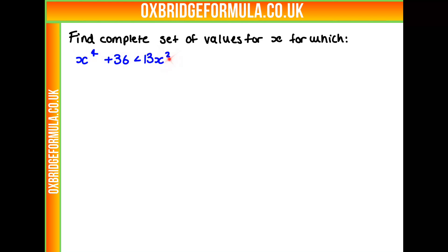So we have to find a complete set of values for x, for which x to the power of 4 plus 36 is less than 13x squared.